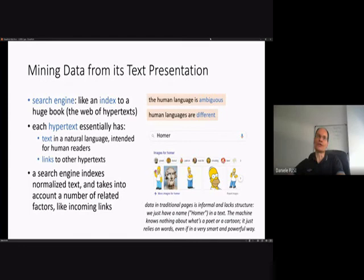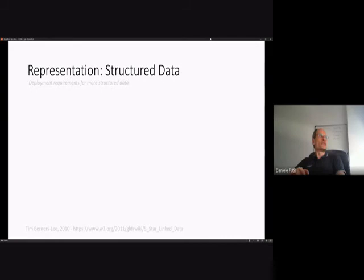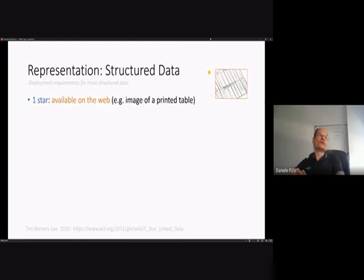If we want to move towards a global representation, we must structure our data in a much more formal way. Tim Berners-Lee in 2010 provided a set of deployment requirements for more structured data on the web, using a five-star rating system. We get one star when we simply put something on the web. For instance, think about a printed sheet of paper with a table on it — we can take a picture and put the JPEG file on the web.